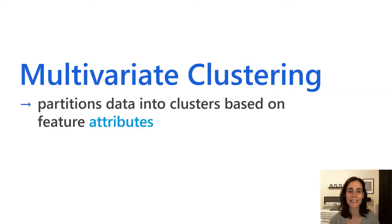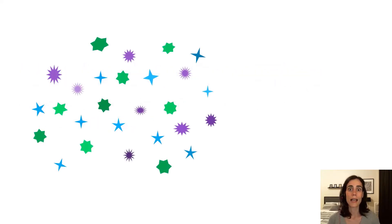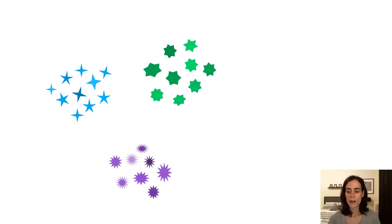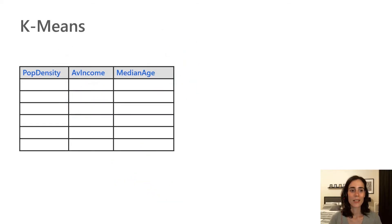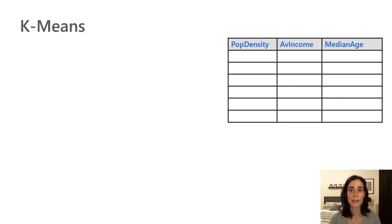Next up is multivariate clustering. Now we're partitioning our data into clusters based on attribute values. Imagine a set of features each with numeric attributes — we want to split or group them so they are as similar as possible within each cluster and as different as possible between clusters. Let's say we have three variables: population density, average income, and median age. We'll use the k-means method, a very common clustering method, to split features based on their attribute values, not their location.